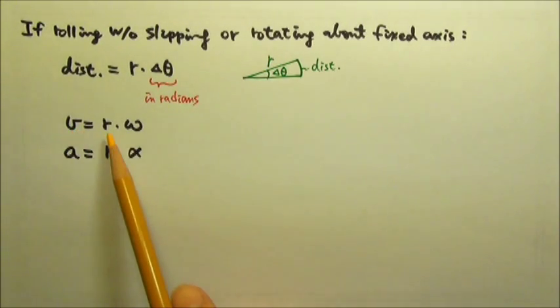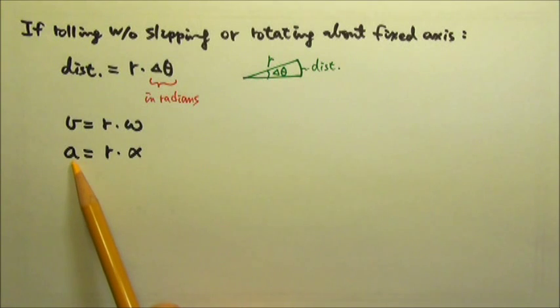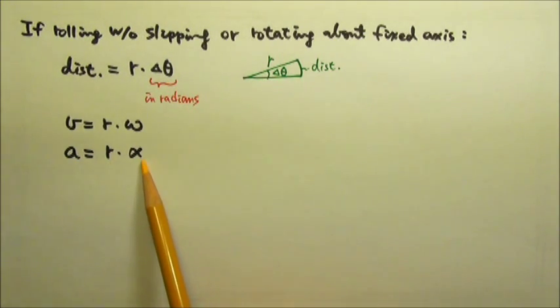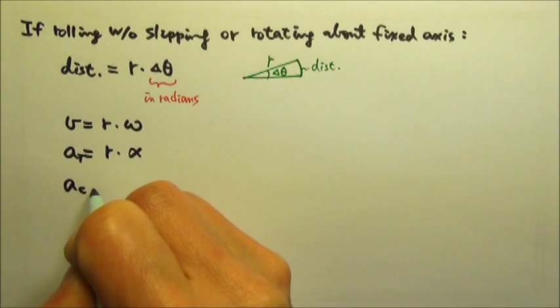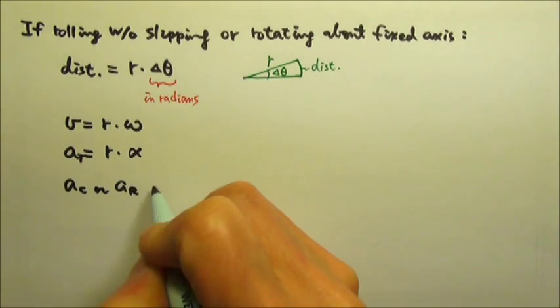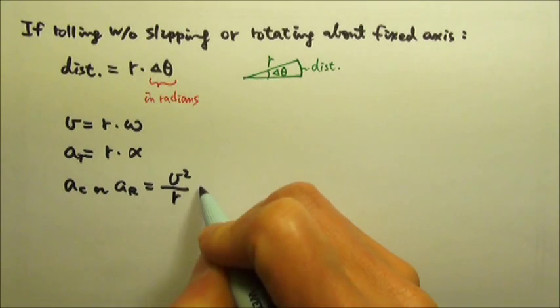The speed is r times omega, and the acceleration is r times alpha. But this acceleration is which kind of acceleration? It is the tangential acceleration.